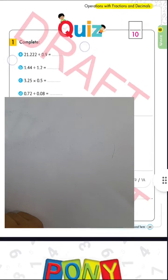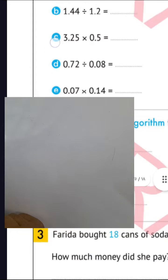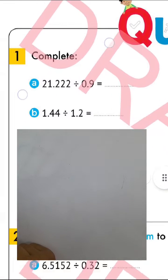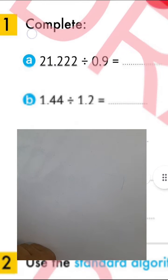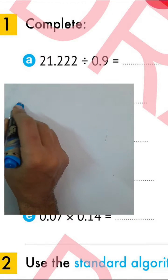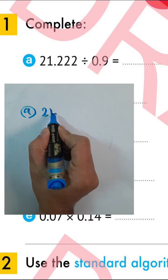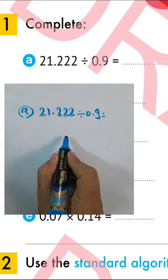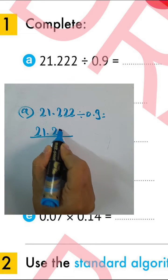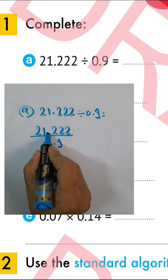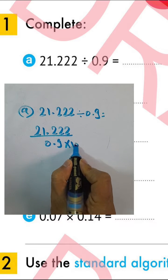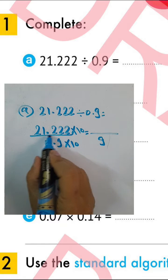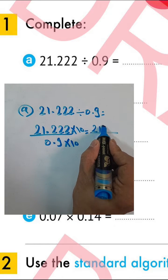Quiz lesson 4 from Bonnie Book. Complete with me. Number one, letter E: we have 21 and 222 thousandths divided by 9. We can write here 21 and 222 thousandths divided by 9. We can multiply numerator and denominator by 10 and move the point right-hand side by one place.